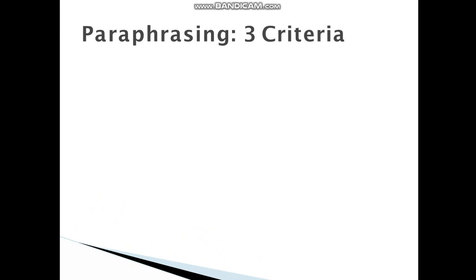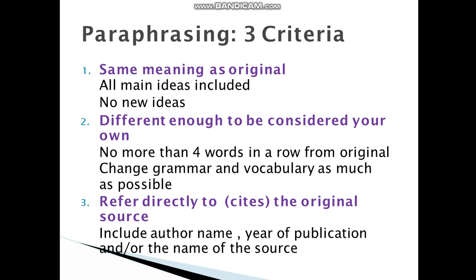In paraphrasing, you have three criteria: same meaning as the original, different enough to be considered your own, and refer directly to the original source. Same meaning as original means all main ideas are included and no new ideas are added. Different enough to be your own means no more than four words in a row from the original text, and change grammar and vocabulary as much as possible. Refer directly to the original source means include the author's name, year of publication, and the name of the source.